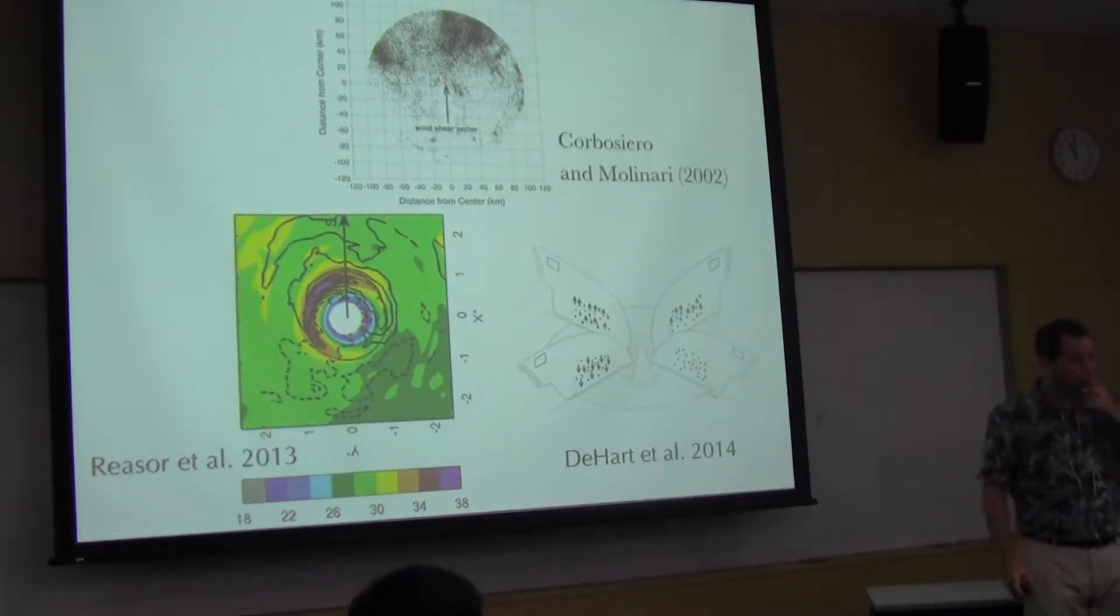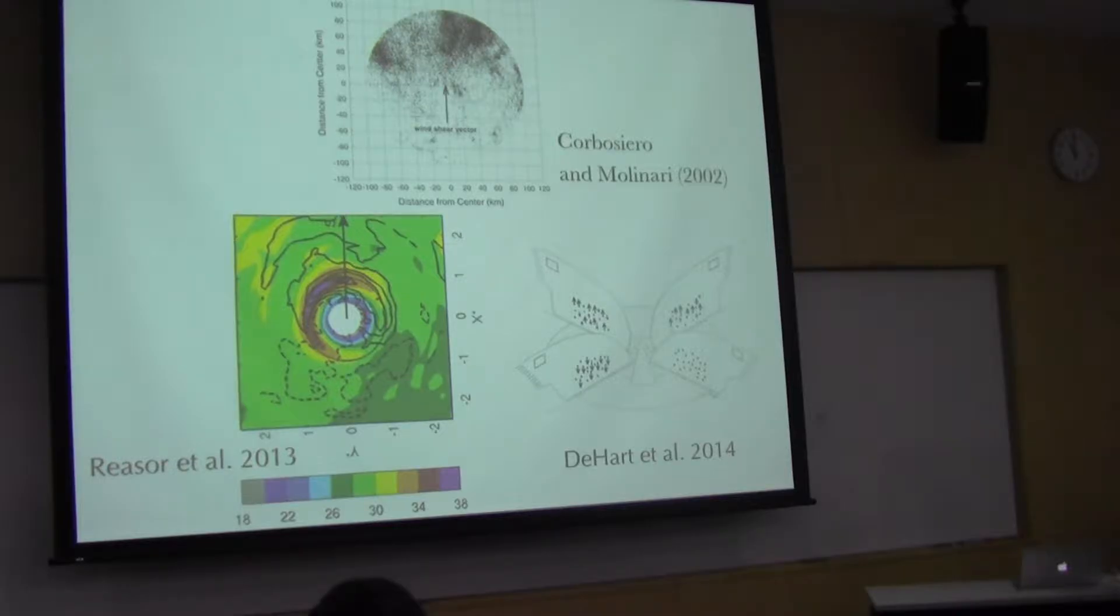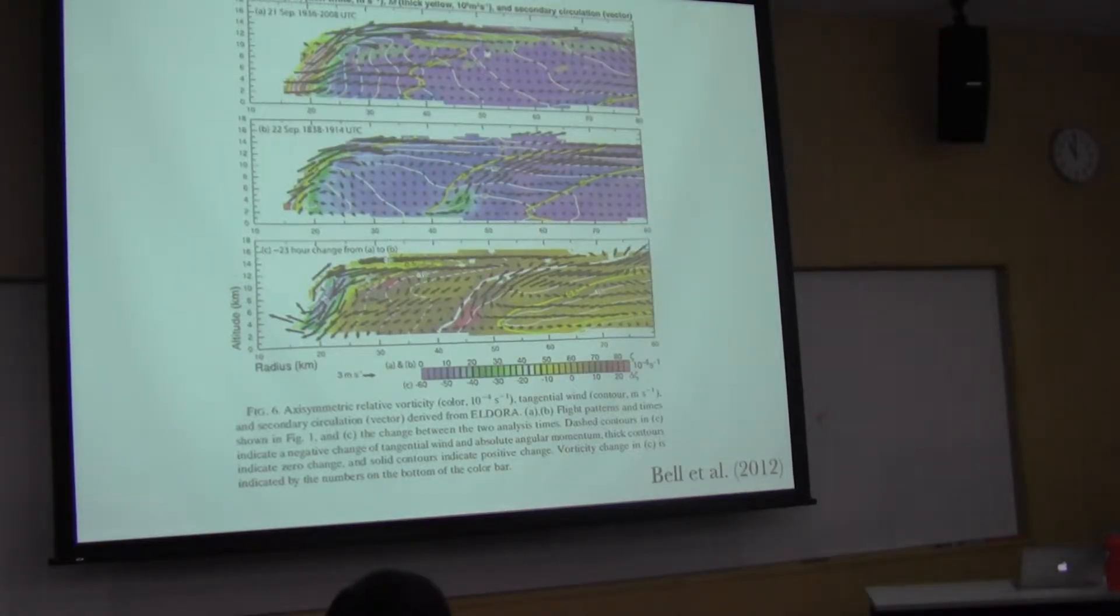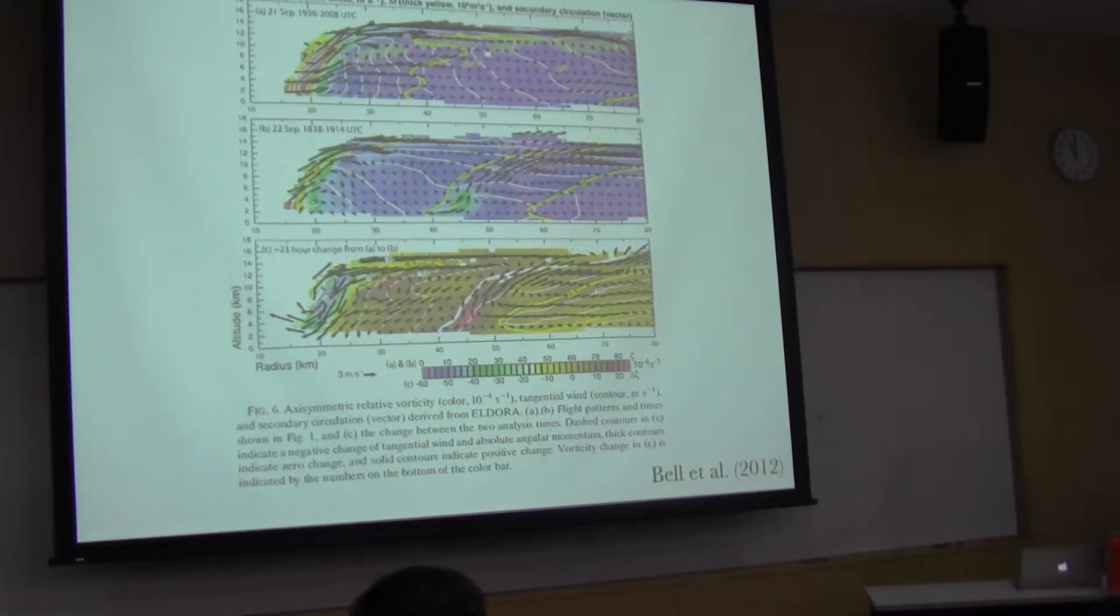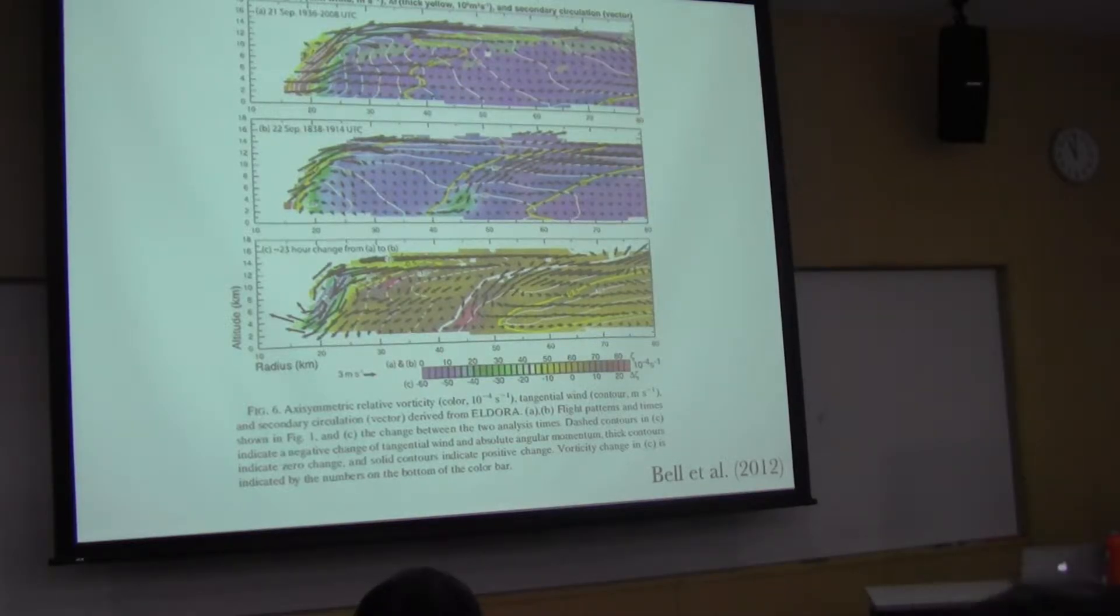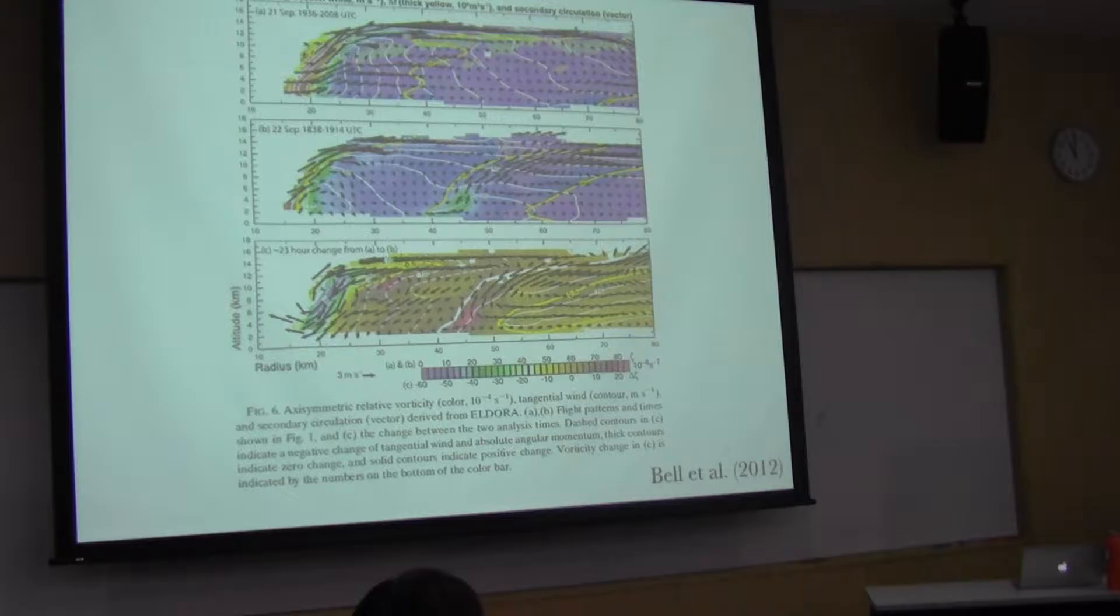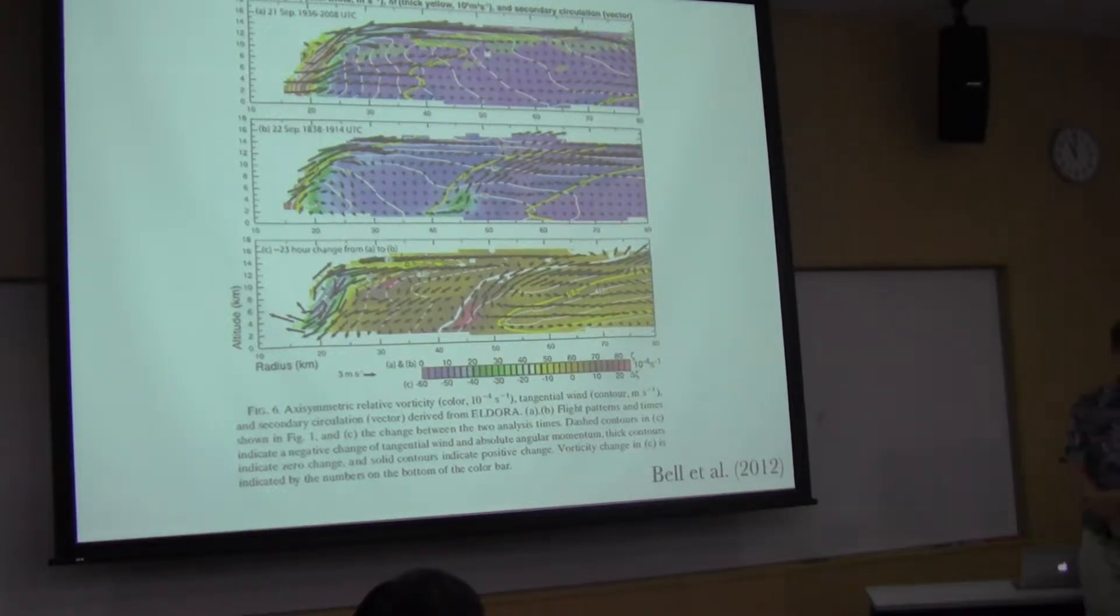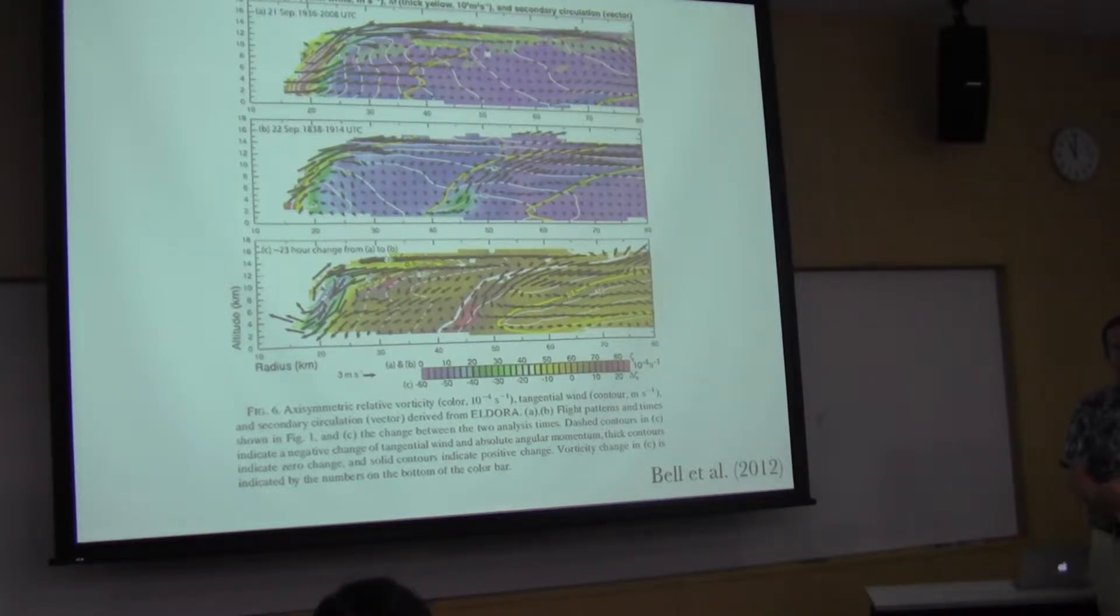Regarding secondary eyewalls, I'd like to know your opinion. There is a debate between Montgomery's group and Kepert's group about secondary eyewalls. Montgomery's group says supergradient wind is important, but Kepert's group says it does not contribute as much. That debate has not been settled. My personal feeling is that they're both right, to some degree, and that it's a matter of emphasis. I think it's a bit like the chicken and egg problem.